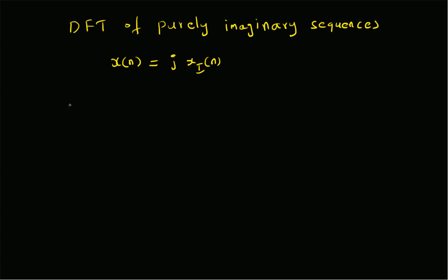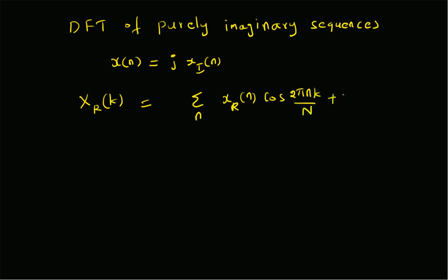Now, recall that for a given signal x of n, the real part of the DFT is given by: x_r of k equals the summation over n of x_r of n times cos(2πnk/N) plus x_i of n times sin(2πnk/N). That is the definition of the real part of the DFT. Since x_r of n is already 0, we can ignore that part of the summation. So we only have to worry about x_i of n times the sine function.